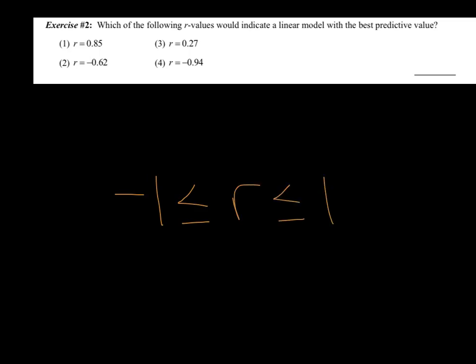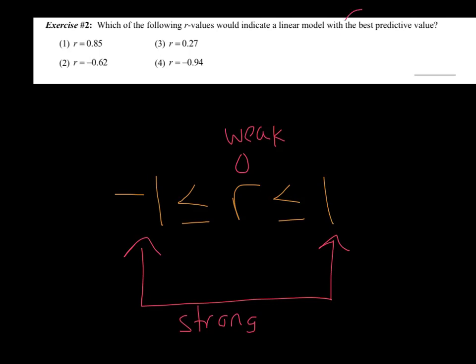Alright, so exercise two. Which of the following R values would indicate a model, a linear model, with the best predicted value? So, remember, you are the strongest when you are close to negative one or positive one. And you are pretty darn weak when you are close to zero. So, if I want to have the best model, I want to be the closest to either positive or negative one. Who can you eliminate? I would say 0.27 is pretty darn close to zero, so I'm going to get rid of him. Now, I've got a 0.8 and a 0.9 and a 0.6. I'm also going to get rid of that 0.6 because the other two are close to positive or negative one. Now, who's closer? I would say negative 0.94 is closest to either positive or negative one.